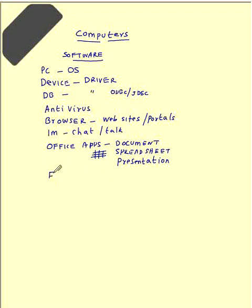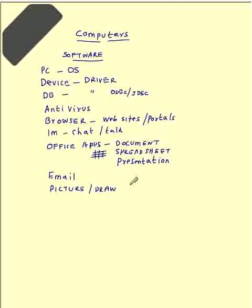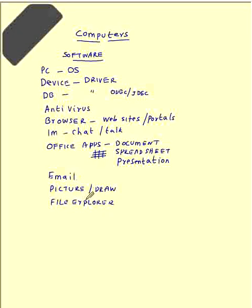You also have email software. You can access email through a browser itself, but you can download the email and use a dedicated client. Examples are MS Outlook and Mozilla Thunderbird. You also have picture or drawing software like Microsoft Paint or JPEG editors, which are quite common and come pre-installed on most PCs. Apart from this, you have got something called File Explorer, through which you can see your files and access folders or directories.